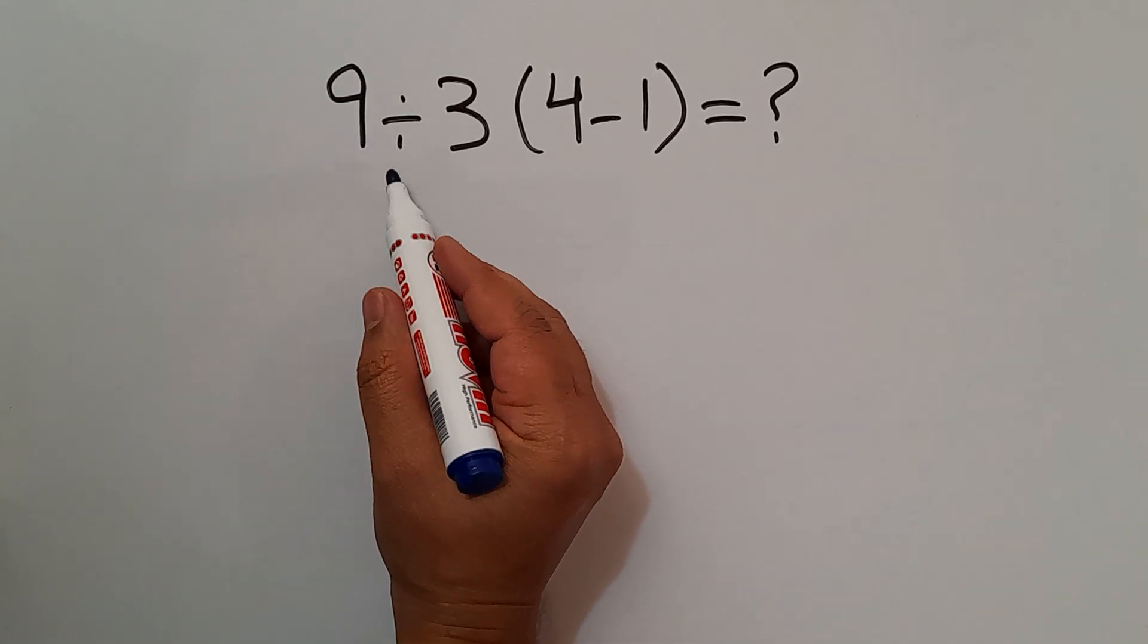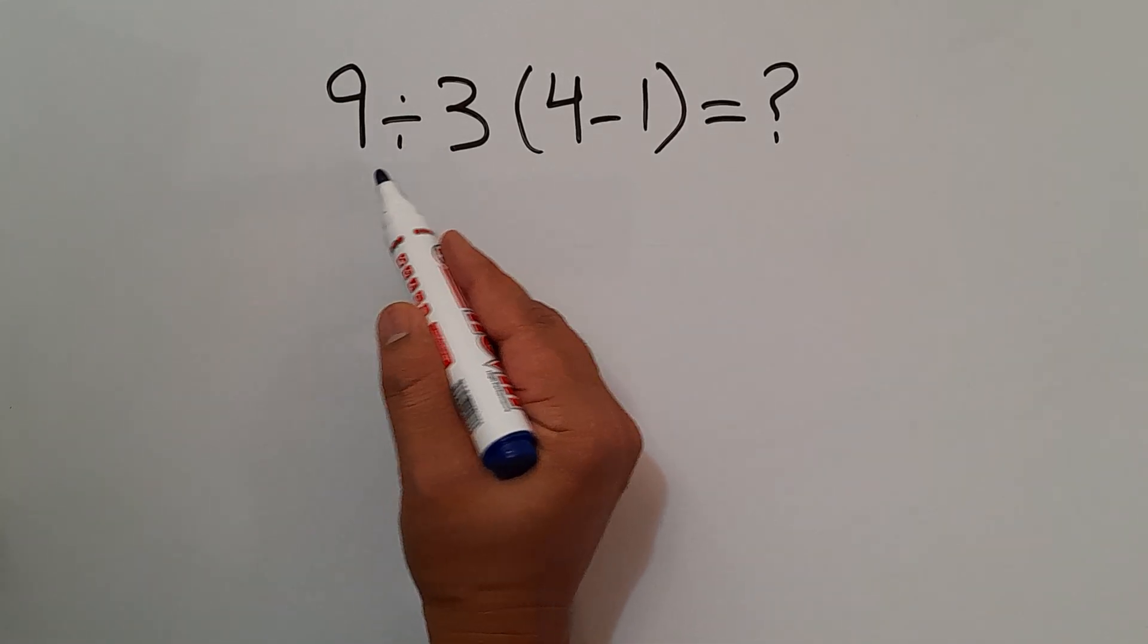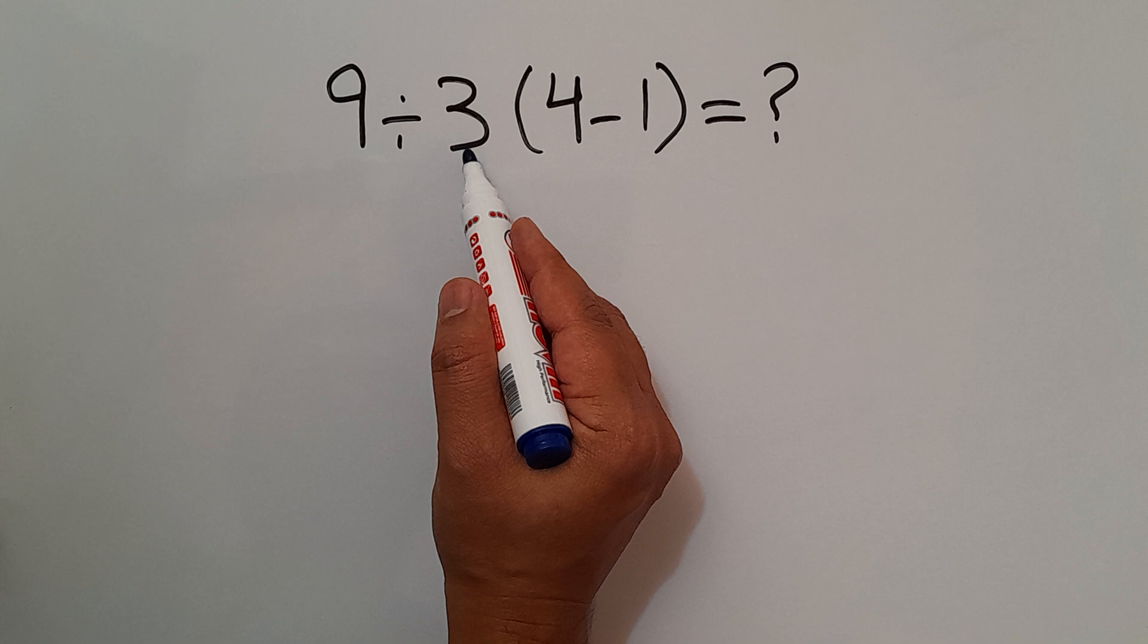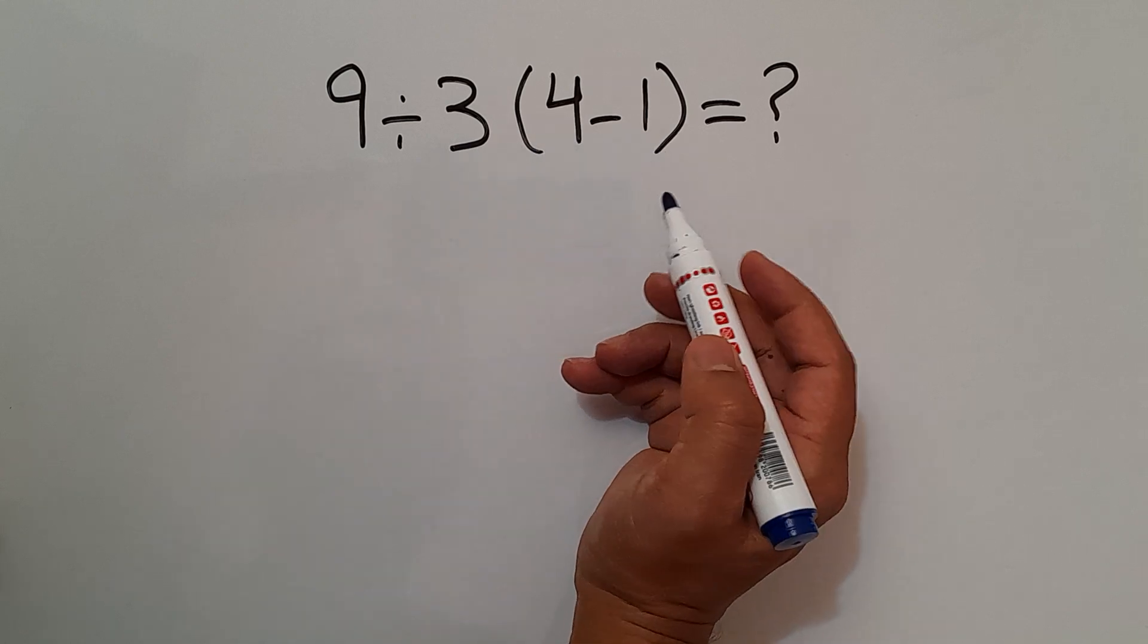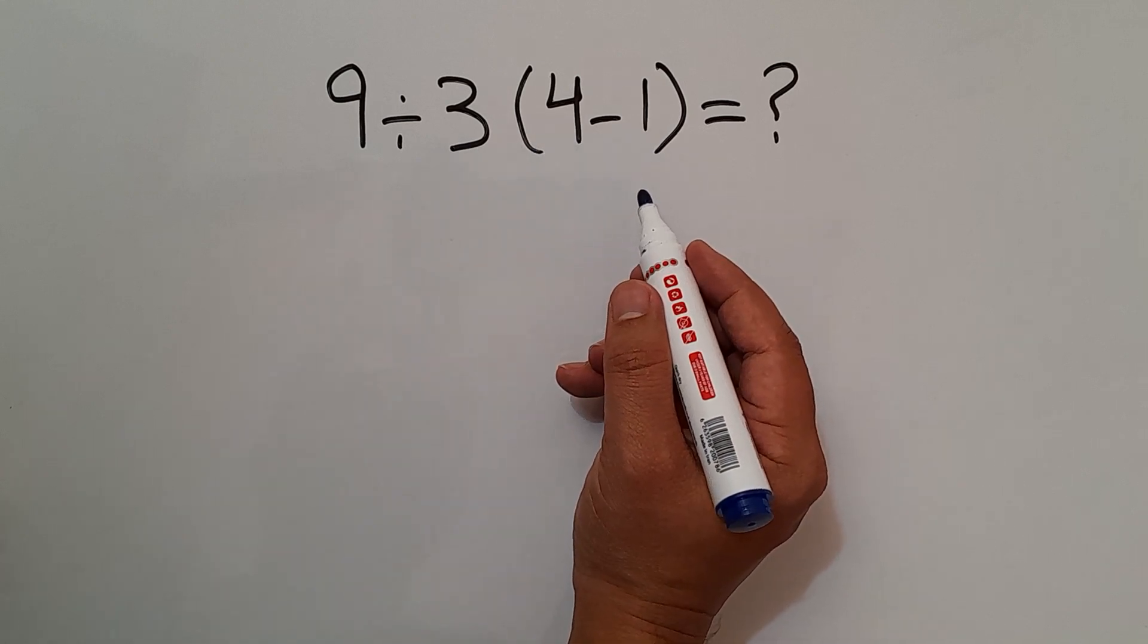Hey guys, welcome to MathJoy. In this video we want to find the value of this expression: 9 divided by 3 times 4 minus 1. Are you ready to solve? Let's go and get started.